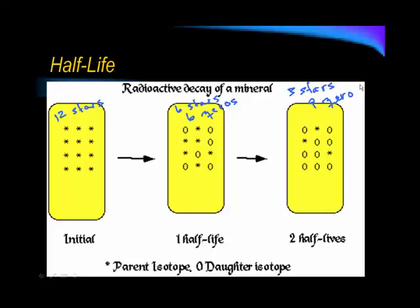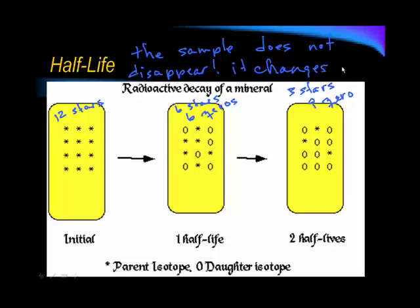So this is just to show you that with radioactive decay, it doesn't disappear. The sample does not disappear. Very important to note, it just changes into something else. In this case, we have stars changing into zeros. So, it's not gone, it's just something different. And that something different can be radioactive and then also go through its own half-life, or it can be stable and pretty much just stay that way.